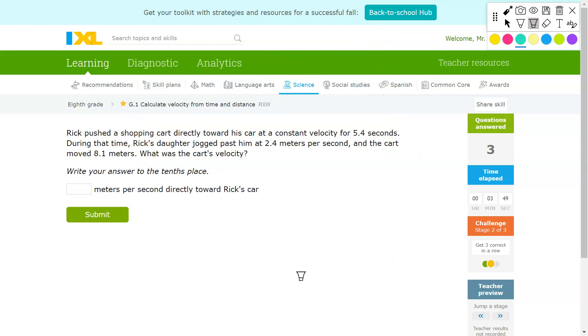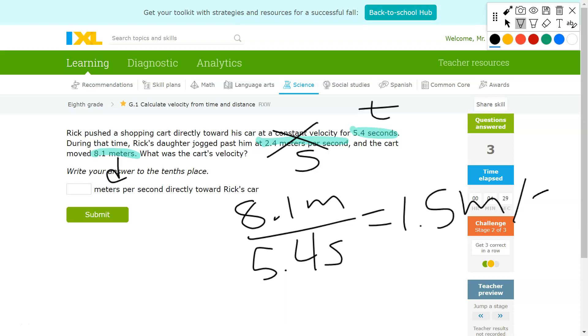Next question. Once again, there are three units in this question, and one of them is not useful to us. 5.4 seconds is a unit of time. 2.4 meters per second is a unit of speed, which means this is not useful. And 8.1 meters is a unit of distance. So 8.1 meters divided by 5.4 seconds. The answer is 1.5 meters per second.